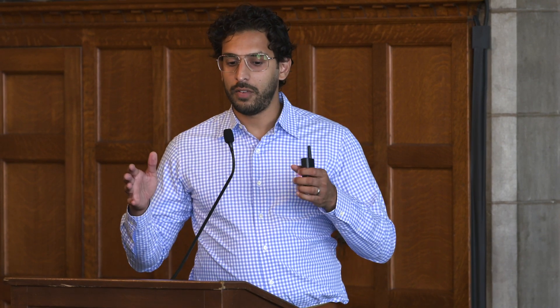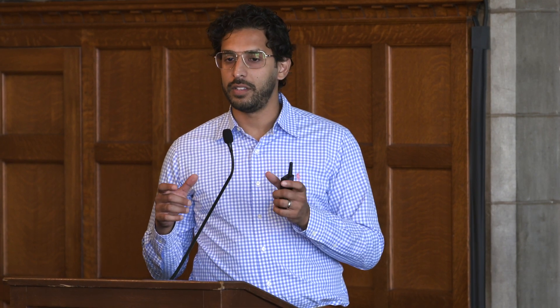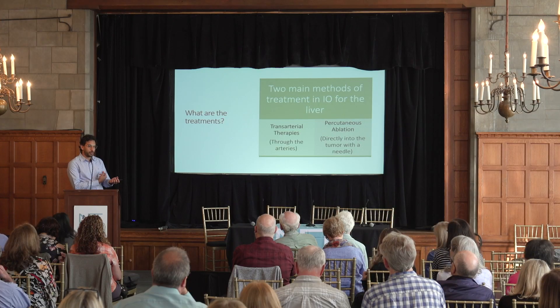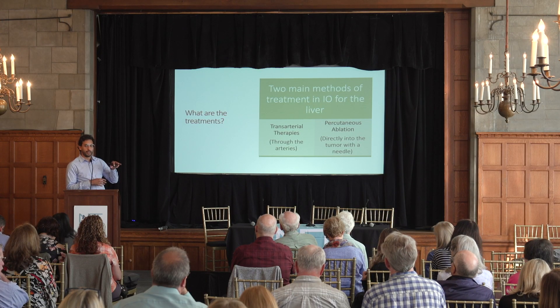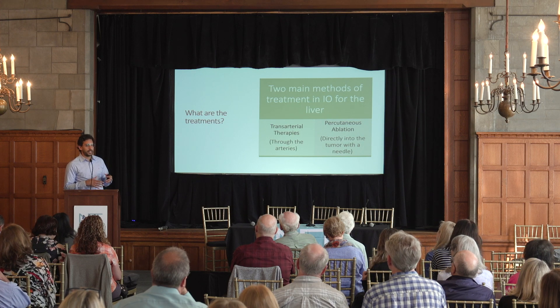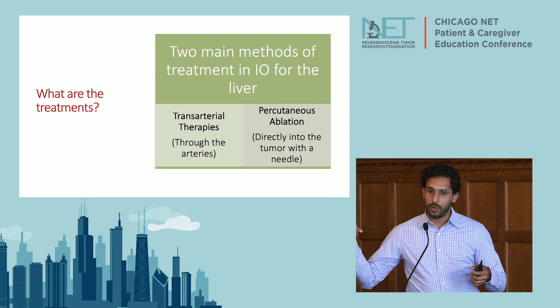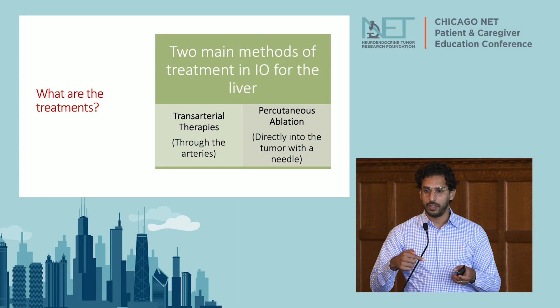So without further ado, what are the treatments? The way I classify what we're able to do is we divide it up into two types of methods that we treat tumors. One is called transarterial — we go through a blood vessel to the blood vessels that feed the tumor. And the other is what we call percutaneous ablation, where we just take a needle and directly put it into the tumor.